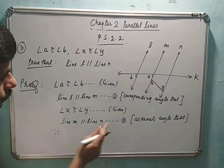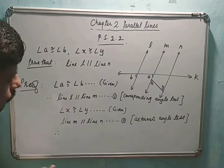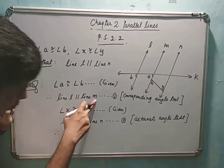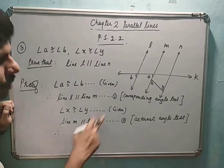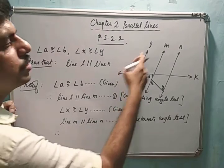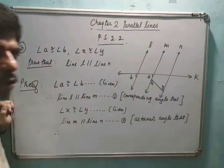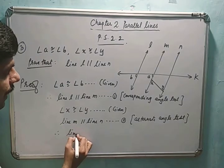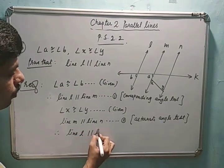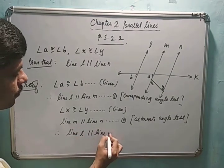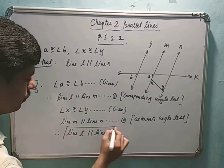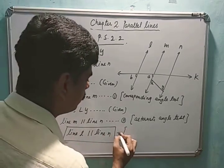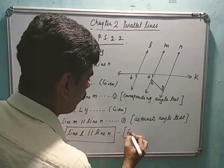Now I can write: therefore, from statements 1 and 2 — l is parallel to m, and m is parallel to n — which means l and n are also parallel. So line l is parallel to line n — reason: from 1 and 2.